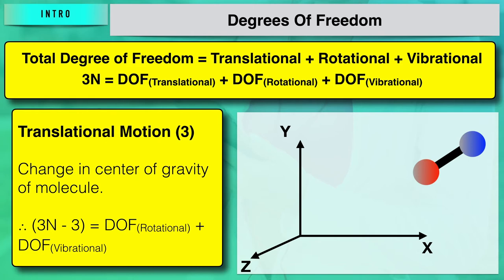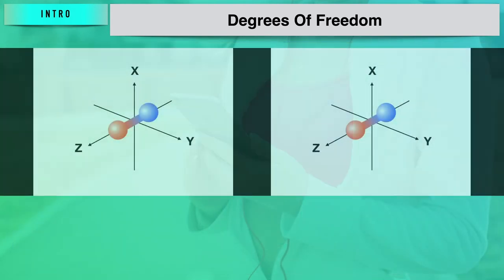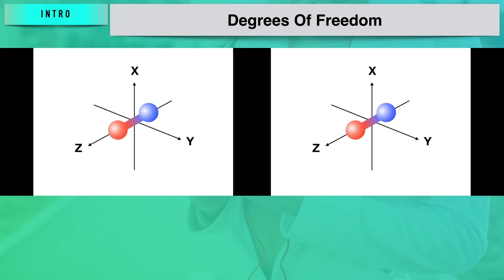Initially, for any molecule we had 3n degrees of freedom. After subtracting these three translational degrees of freedom, we are left with 3n minus 3, which represents the degrees of freedom for rotational motion combined with vibrational motion. With reference to the rotational coordinate system, we need to specify it for two different types: linear molecules and non-linear molecules.